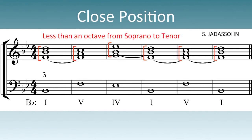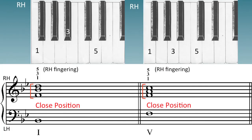In the current example, the three upper voices are close together, never more than an octave separating the soprano from the tenor. We call this close position. In close position, the upper voices are easy to play on the piano keyboard, fitting comfortably under the fingers of the right hand.